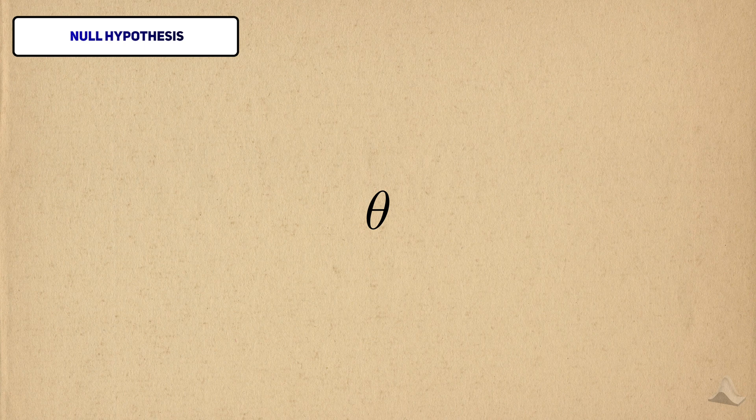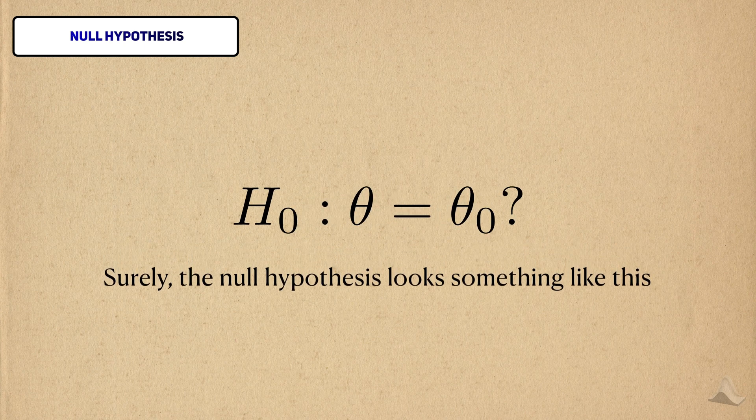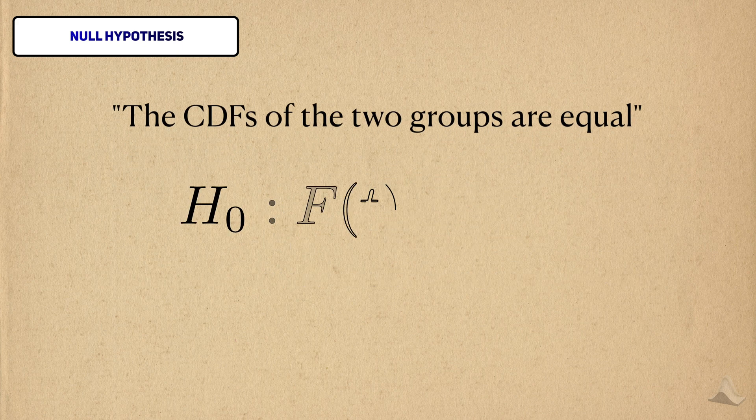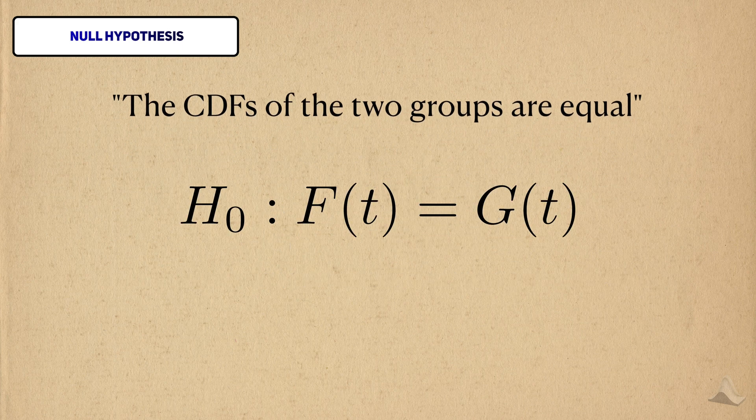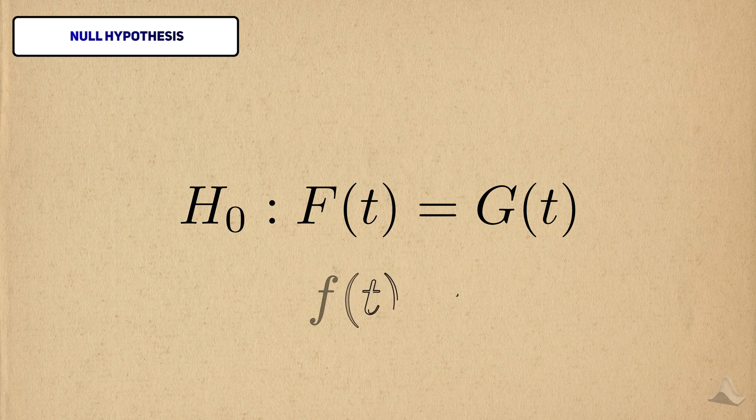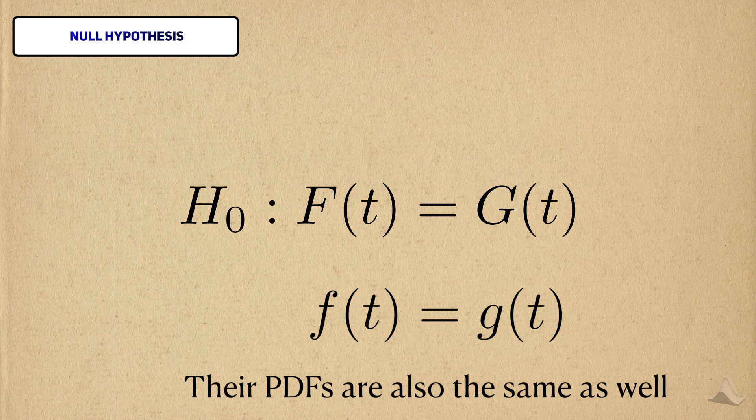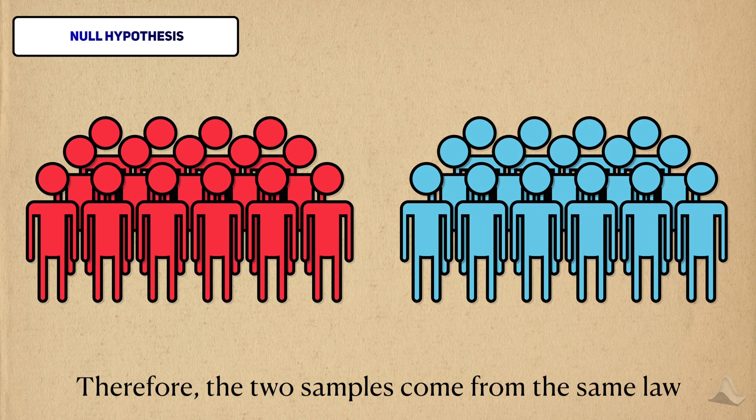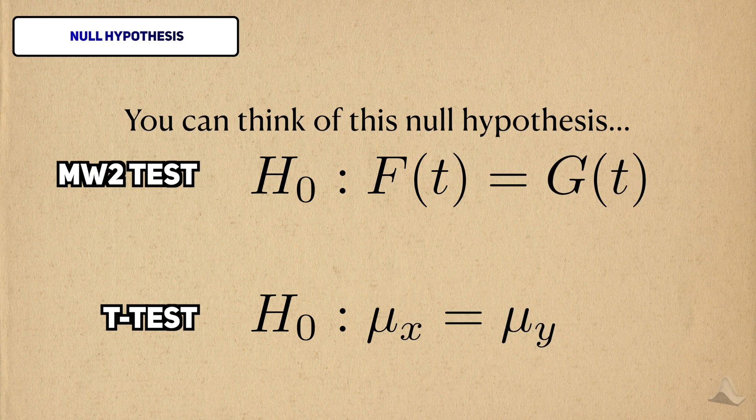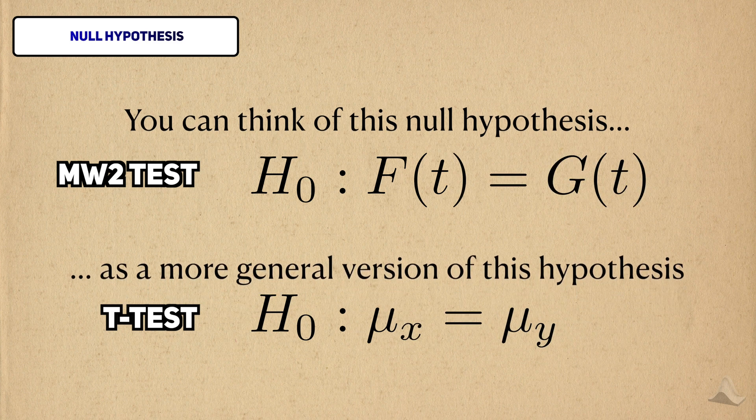If the parameter of interest for the MW2 test is this location shift, you might be tempted to think that the null hypothesis for the test is based on theta. But that's actually wrong. The null hypothesis states that the CDFs for the two groups are equal to each other, for all values of t. If the CDFs are equal to each other, then by extension, their probability density functions are also the same. Therefore, the data from both groups come from the same law. You can think of this null hypothesis based on the CDF as a more general case of this null hypothesis from the t-test.